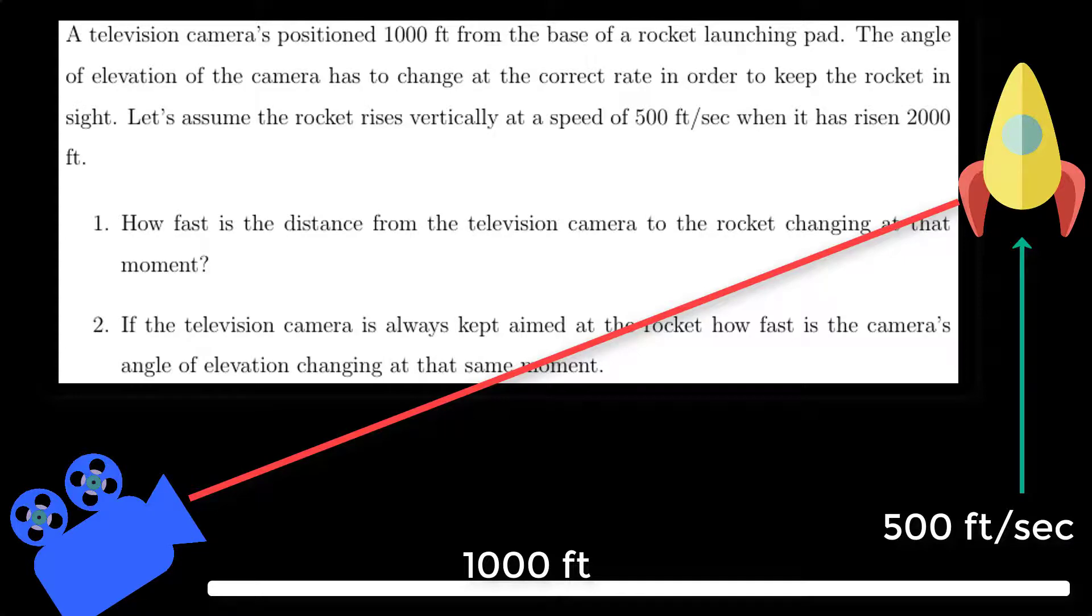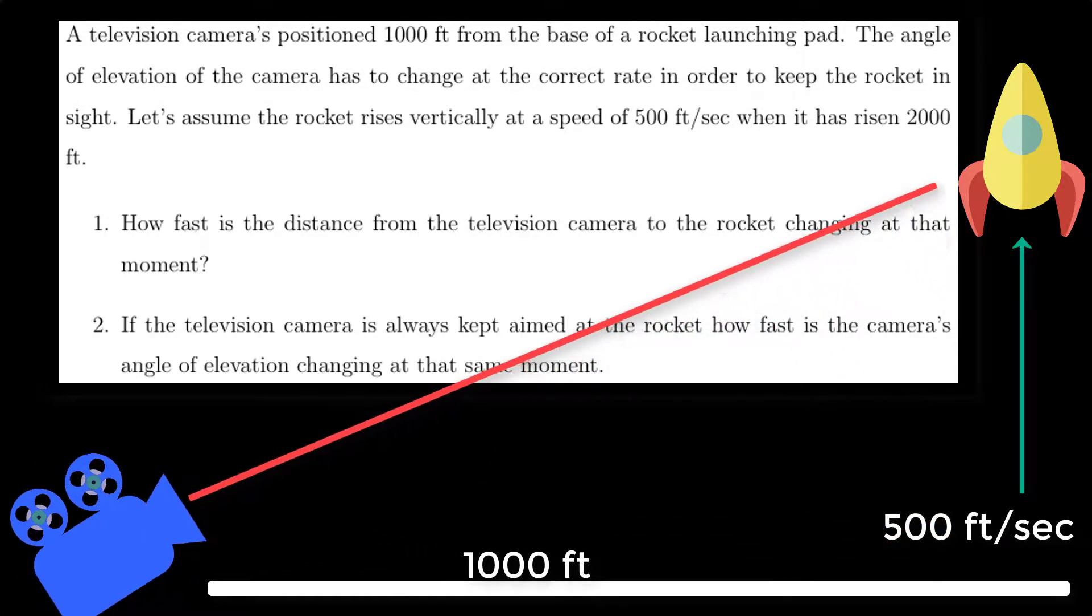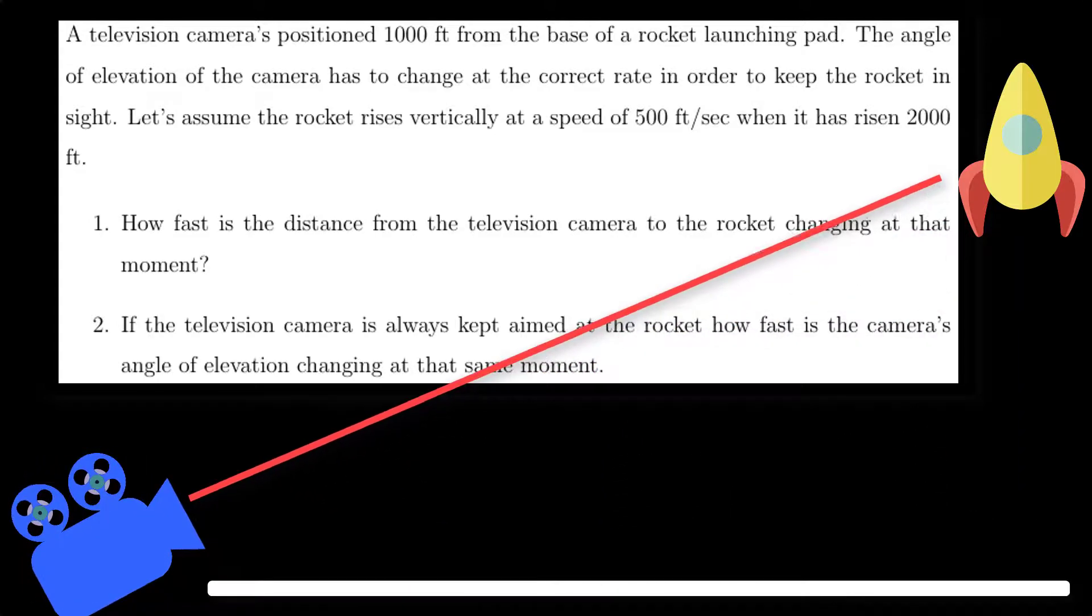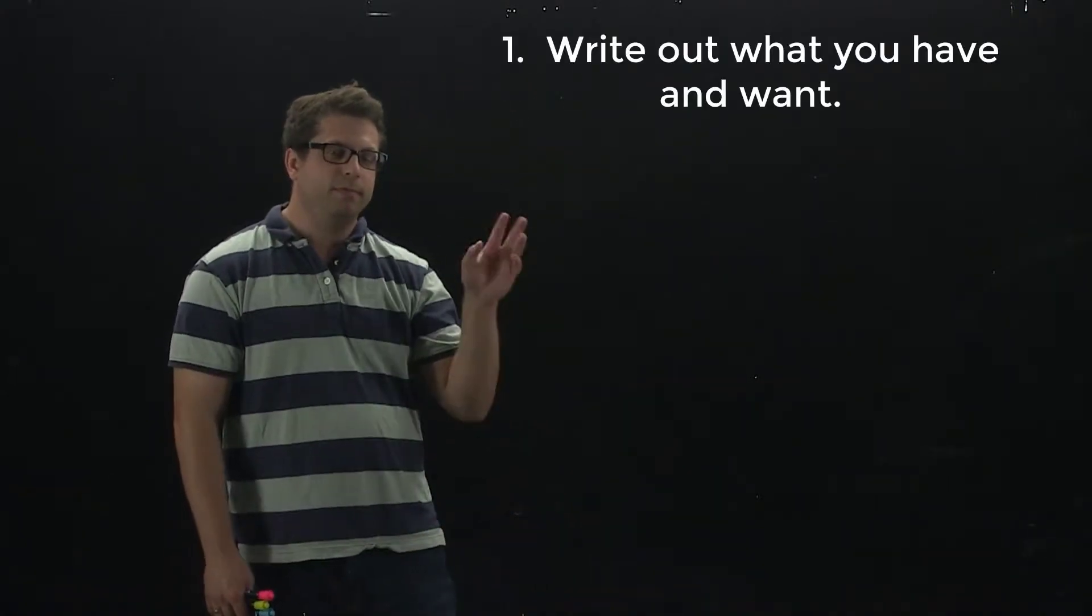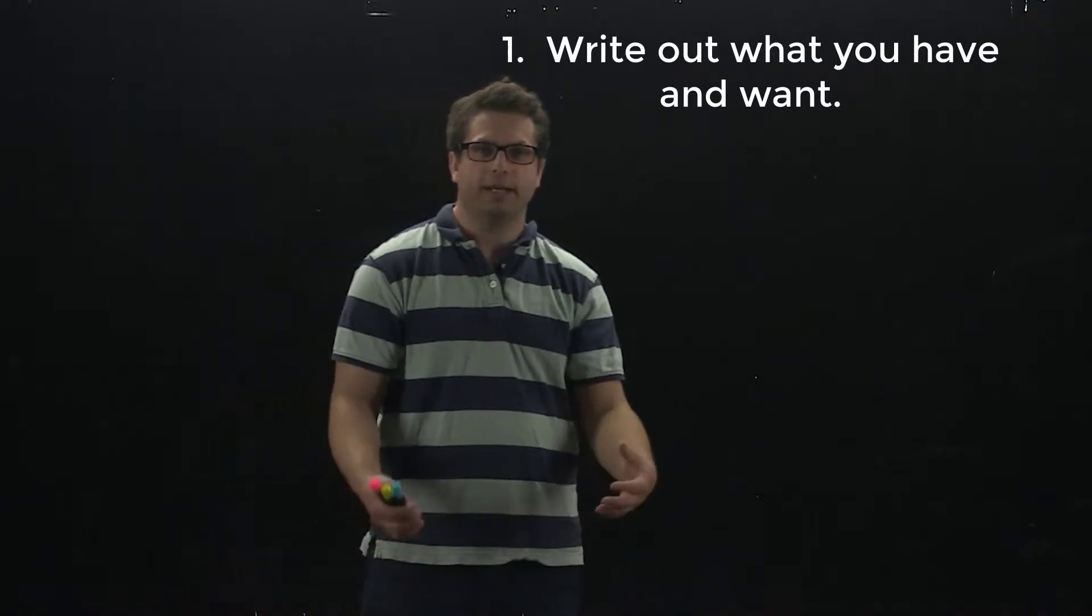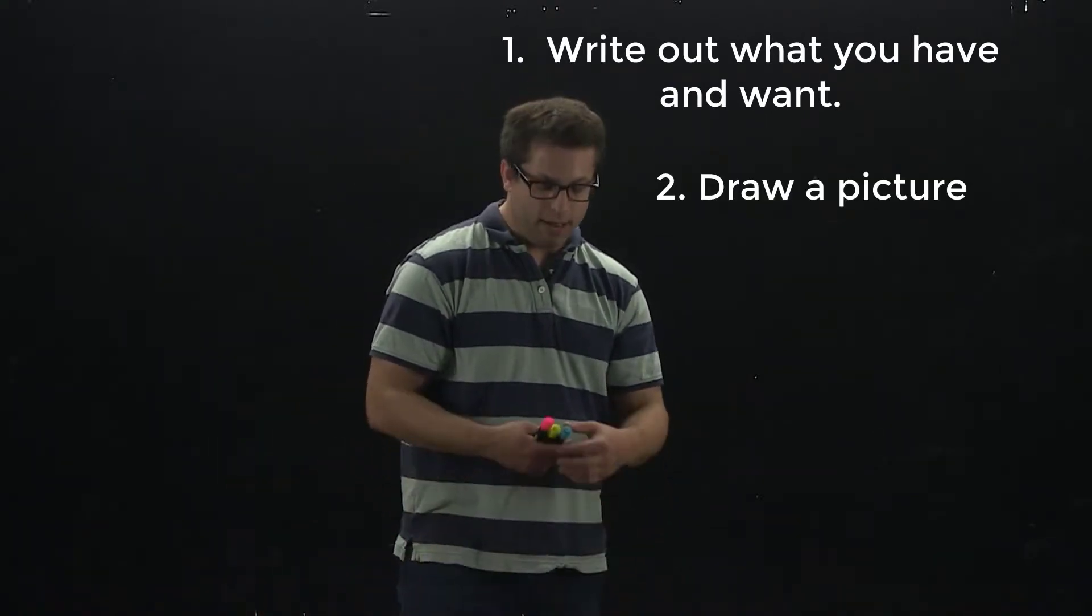Part B is if the television camera is always kept aimed at the rocket, how fast is the camera's angle of elevation changing at that moment? All right, so let's move that out of the way. It's a very long word problem. Step one and step two are about writing down all the information from that word problem and then drawing a picture as well. Let's go ahead and do that.